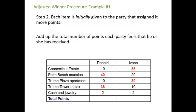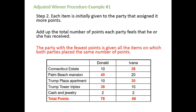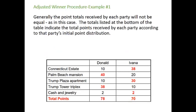We then add up the total number of points each party feels they have received. Donald feels he has been awarded 78 of his points, while Ivana feels she has only been awarded 68 of her points. The party with the fewest points is given all items on which both parties placed the same number of points. Since Ivana initially has fewer points than Donald, she wins the cash and jewelry, bumping her up to 70 points. Donald currently feels he has 78 points and Ivana 70, so it's not yet a fair distribution.